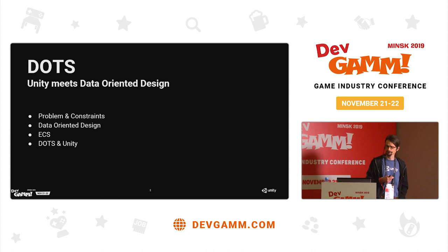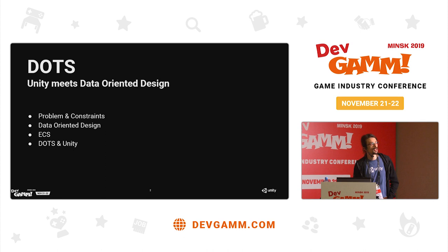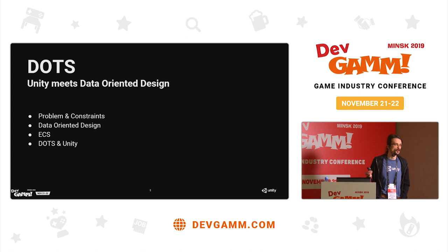I will segue into ECS, and it's on ECS that I will spend most of my time. ECS is the way that we apply these design principles to Unity. And finally, I will talk about the future of Unity — what we are trying to do and what we are going to do with ECS and the rest of the data-oriented tech stack.